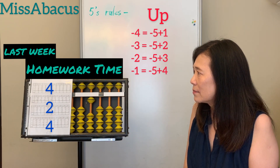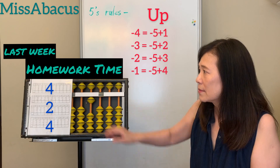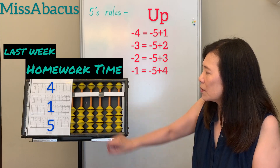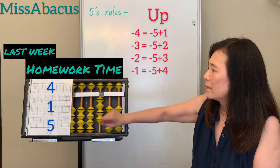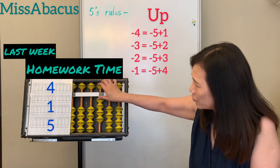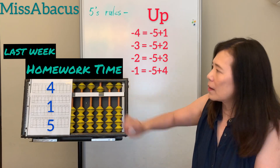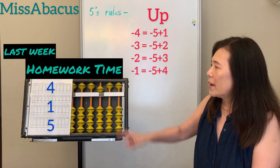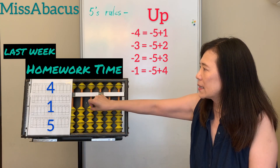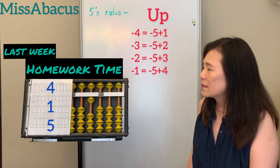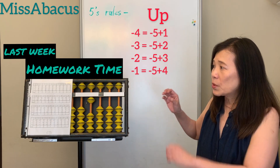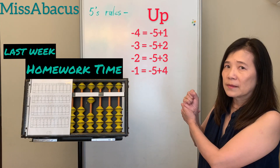Number 5: 4 plus 1. One is down right. On 4 plus 5: minus 5, plus 10. Answer: 10. Let's do number 6 with fingers.